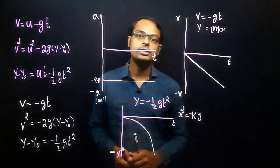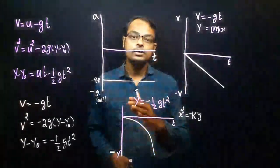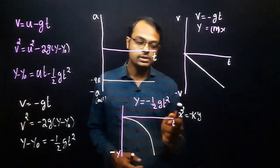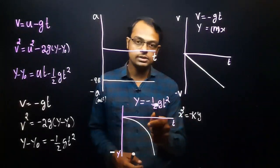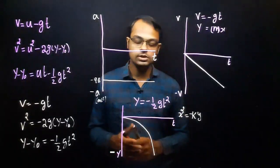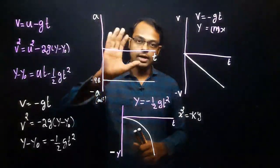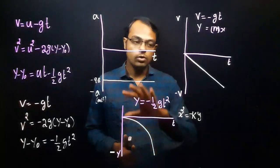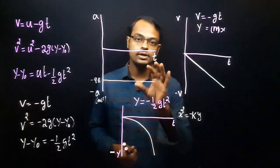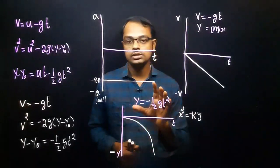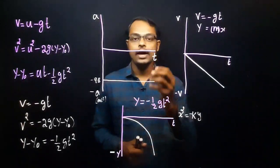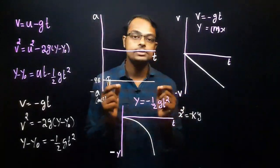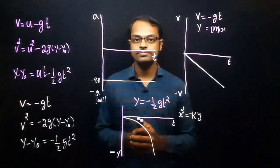All three graphs — acceleration-time, velocity-time, and position-time — are drawn in the fourth quadrant. The main reason is that acceleration due to gravity acts vertically downward, and we always take it as −g. I hope it is clear. Thank you.